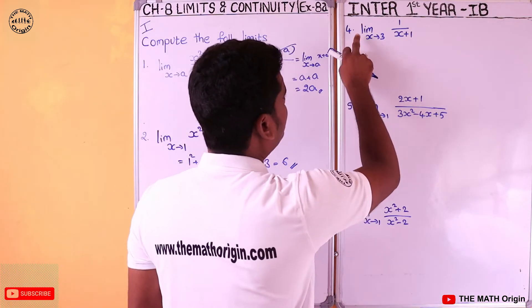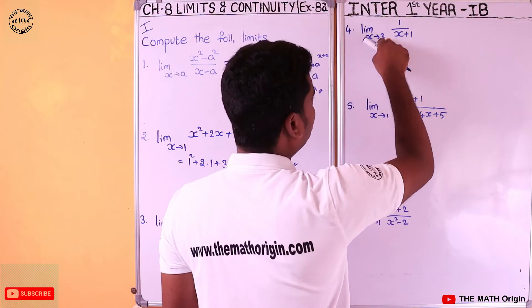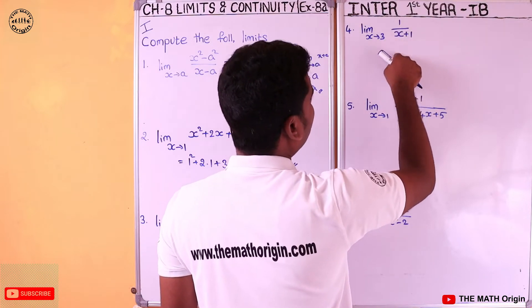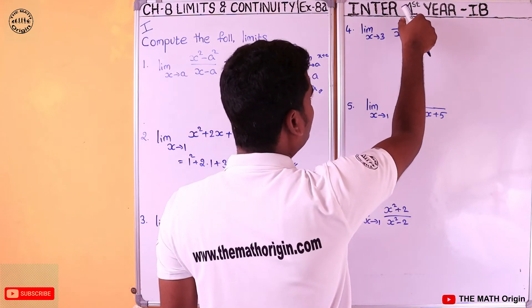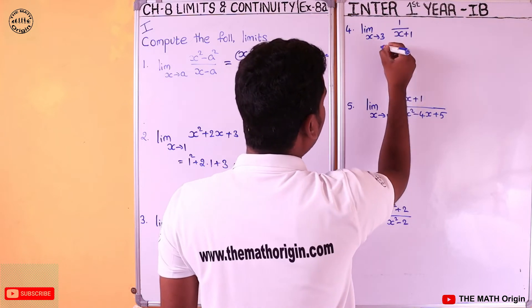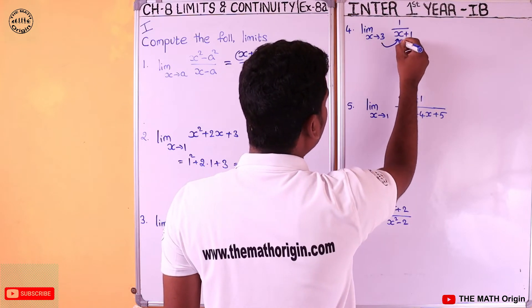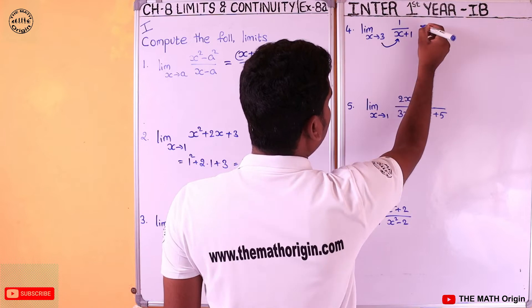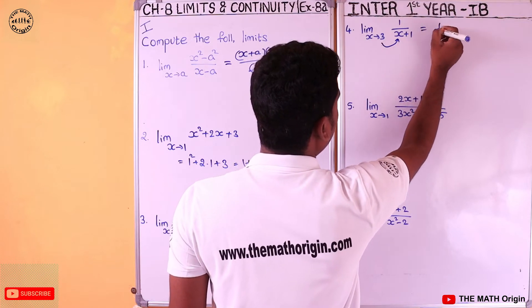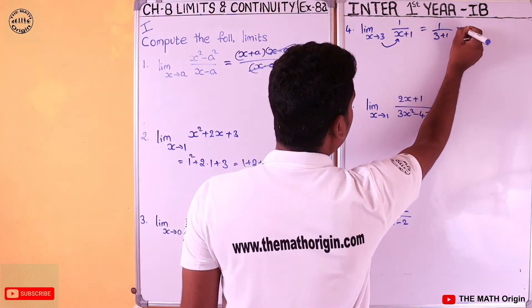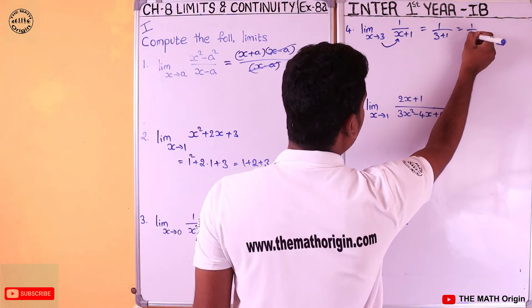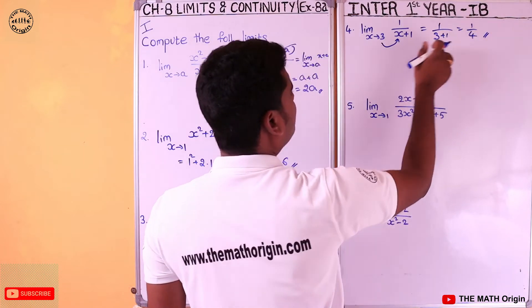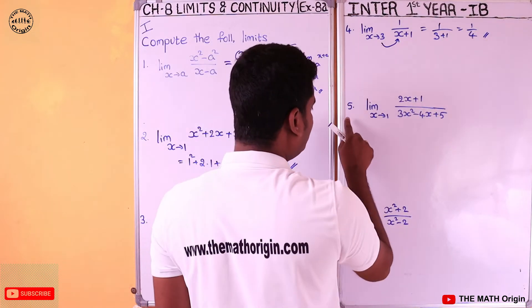Fourth question: limit x tends to 3 of 1 by (x + 1). We can directly substitute x = 3. That equals 1 by (3 + 1) = 1 by 4. With this, we completed the fourth question.